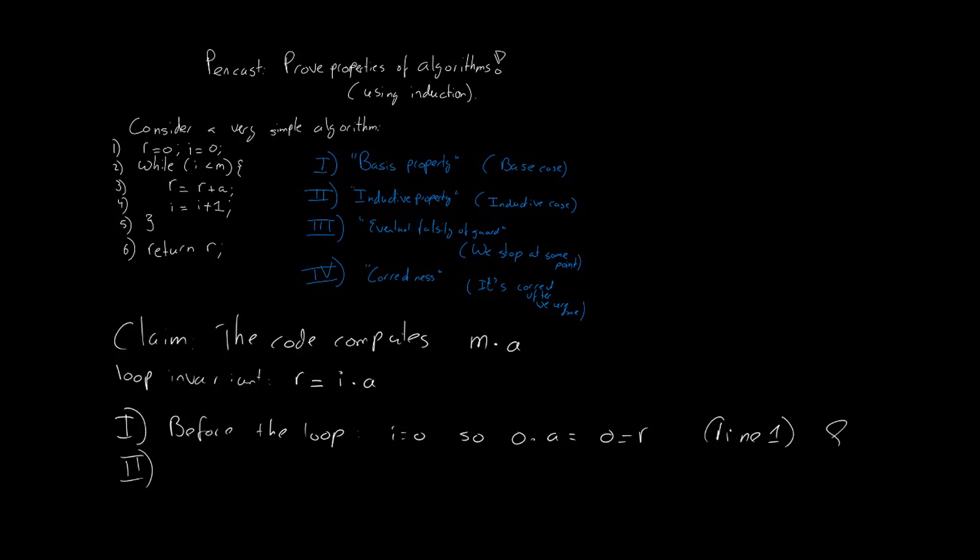Then let's take a look at step number two, the inductive property. The inductive property states that after a loop, or after one iteration of the loop, the invariant is still true. And, similar to induction, we assume that the invariant is true right now. And now we're going to execute a loop. So, let's take a look at what happens.